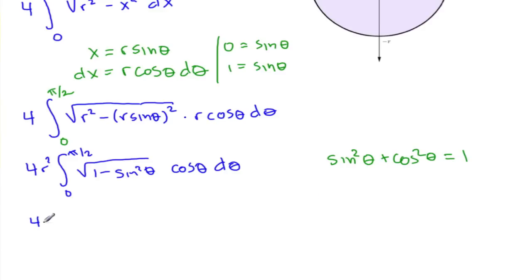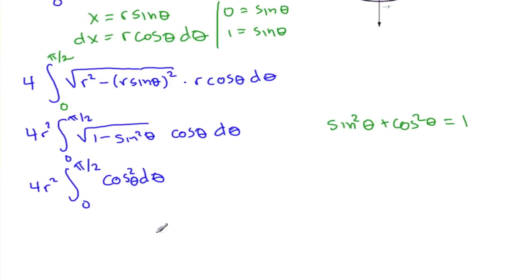So 4r squared, integral from 0 to pi over 2, of root cosine squared. Cosine squared is just going to be cosine, times cosine, so we're going to end up with cosine squared d theta.